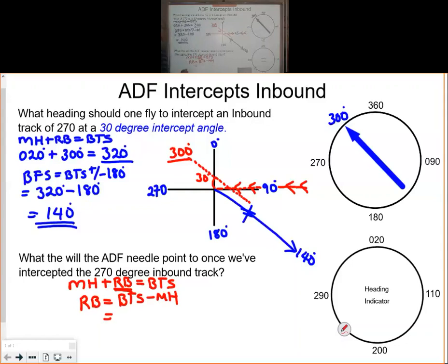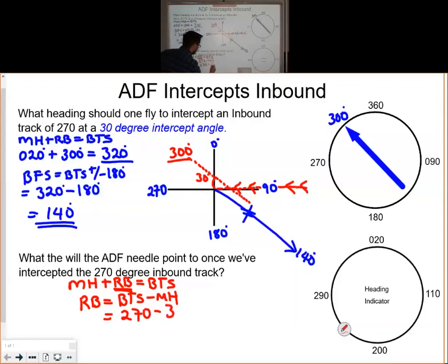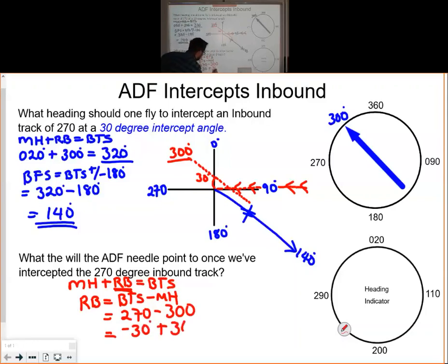Our bearing to the station is 270 — we want to go inbound on the 270 inbound track — and we subtract it from our heading of 300. So our relative bearing is negative 30 degrees. Since we need a positive answer, we add 360 degrees, giving us a relative bearing of 330 degrees.